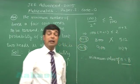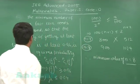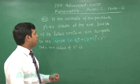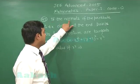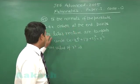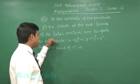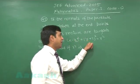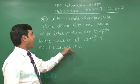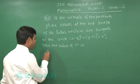Let us go for the next one, that is question 45. If the normals of the parabola y^2 = 4x drawn at the endpoints of its latus rectum are tangents to the circle (x-3)^2 + (y+2)^2 = r^2, then the value of r^2 is. I have to find the value of r^2.